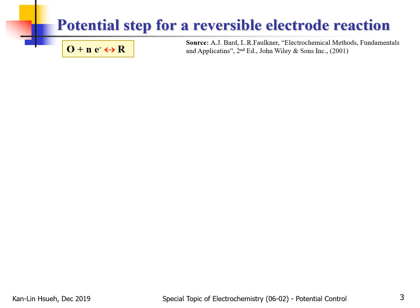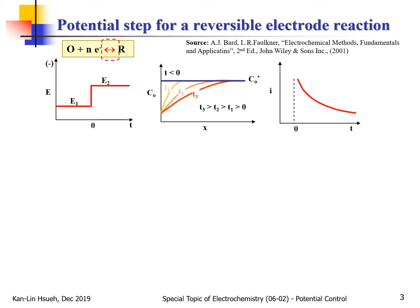The reaction is the same: O may be reduced into R. But in this case, we also consider that R can be oxidized back into O. The potential step control profile and current are quite similar to Section 1 — the pure mass transfer control. The difference here is that when we step the potential from E1 to E2, the potential E2 is not as negative as in the previous case.